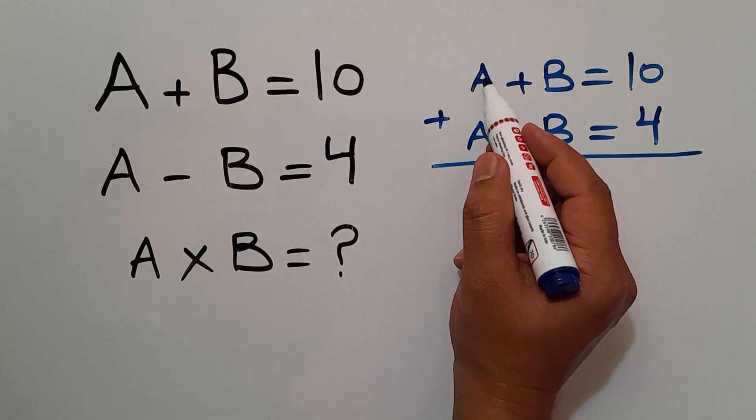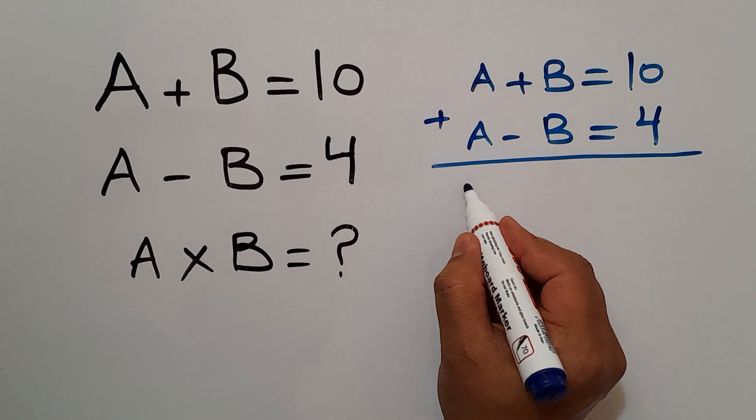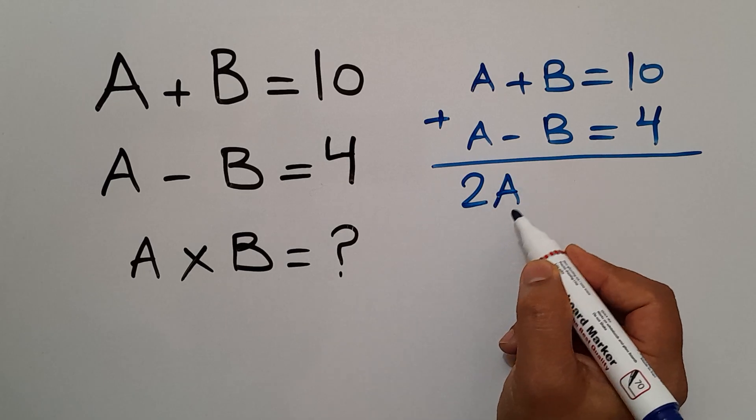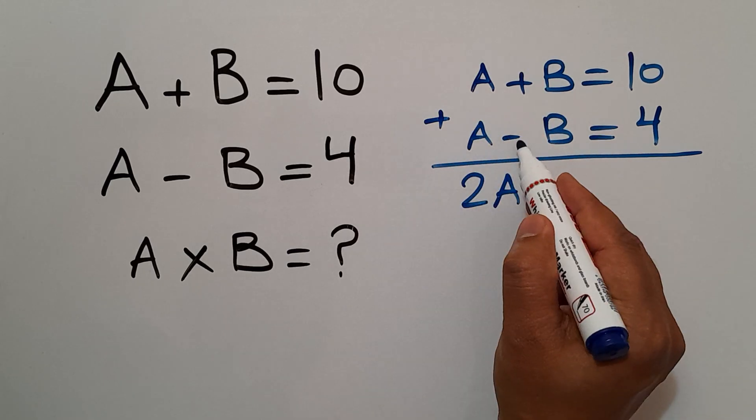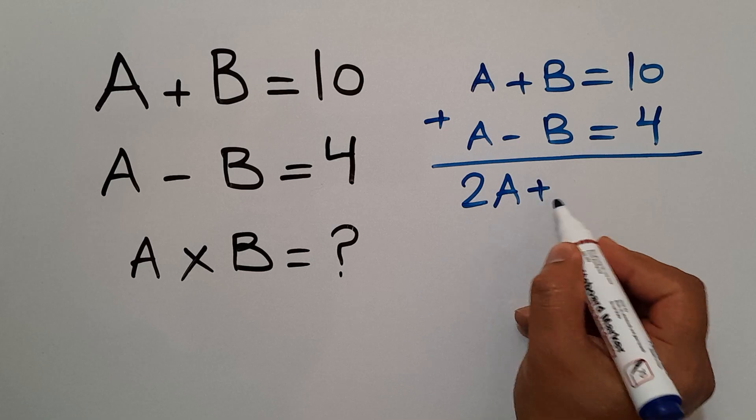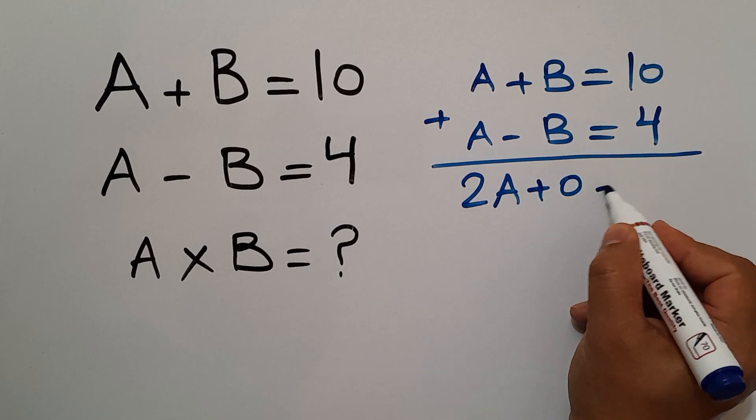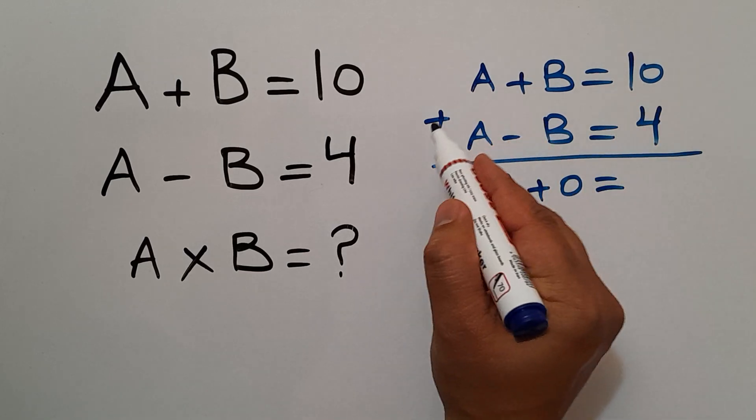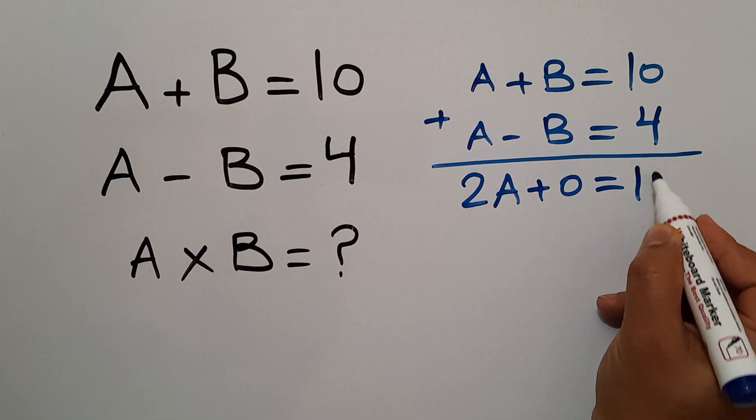A plus A gives us 2A. B plus minus B equals 0. And this is equal to 10 plus 4 which equals 14.